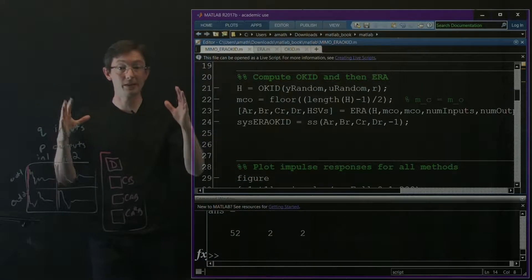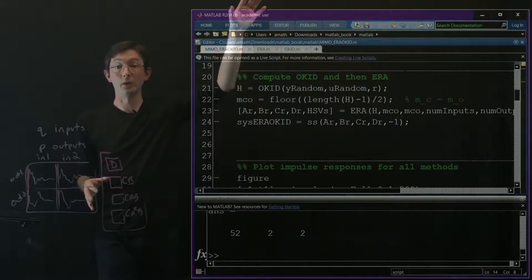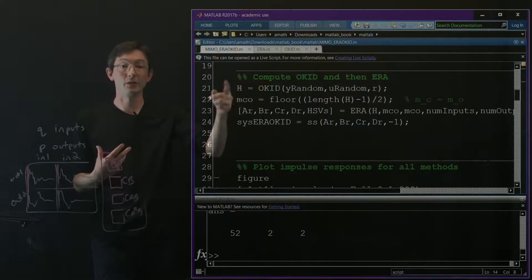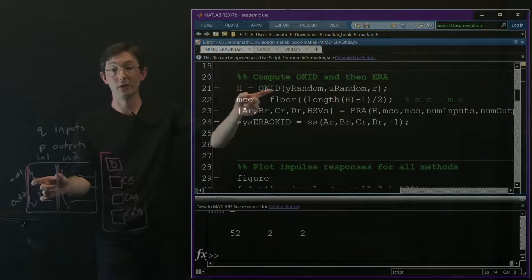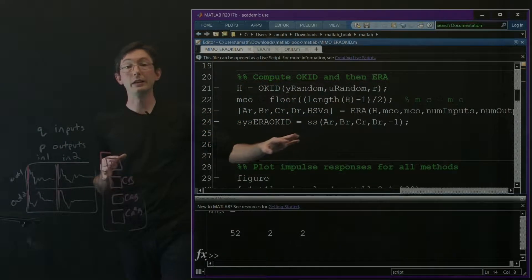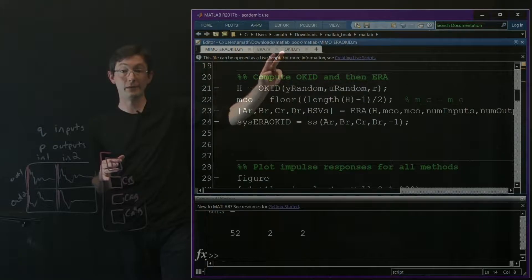Then I basically just plug H directly into ERA and I get my matrices back. I hope this is clear: if you can get impulse response data, you can just do ERA in one shot. If you have randomly forced input data, you have to first estimate the impulse response with OKID, then run it through ERA. But in both cases it's only a few lines of MATLAB code once you have these functions.